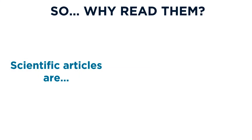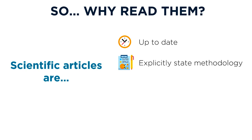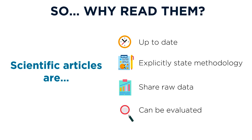Scientific articles provide current or up-to-date information, whereas your textbook might be out of date. Scientific articles also explicitly state their methodology, which allows you to replicate their study. And they share their raw data, which is helpful if you need to extract results for your own research. You can critically evaluate their conclusions based on the data presented and determine if it is credible or relevant research.